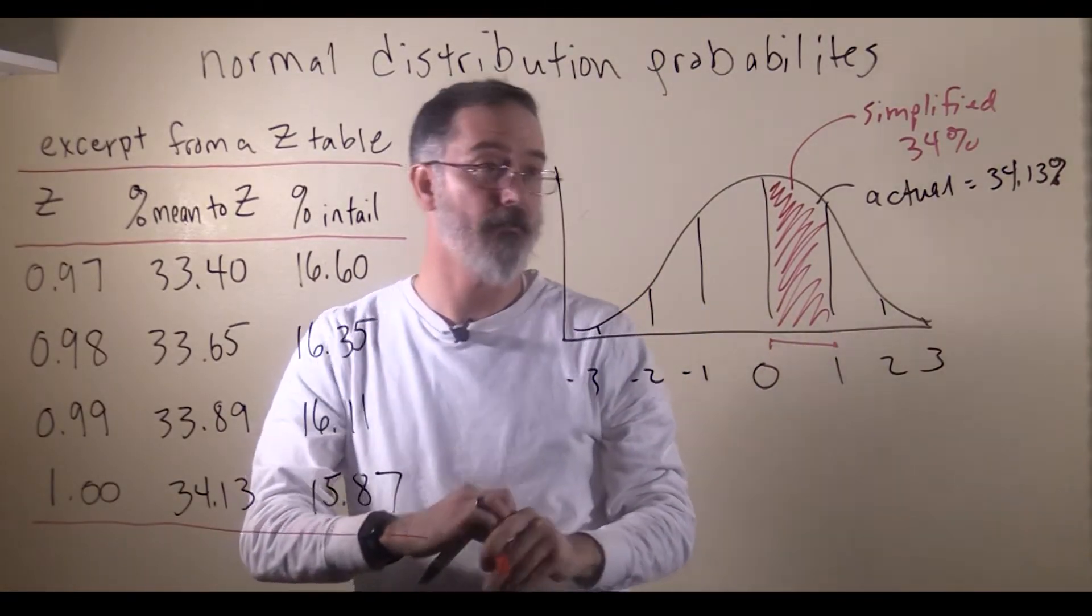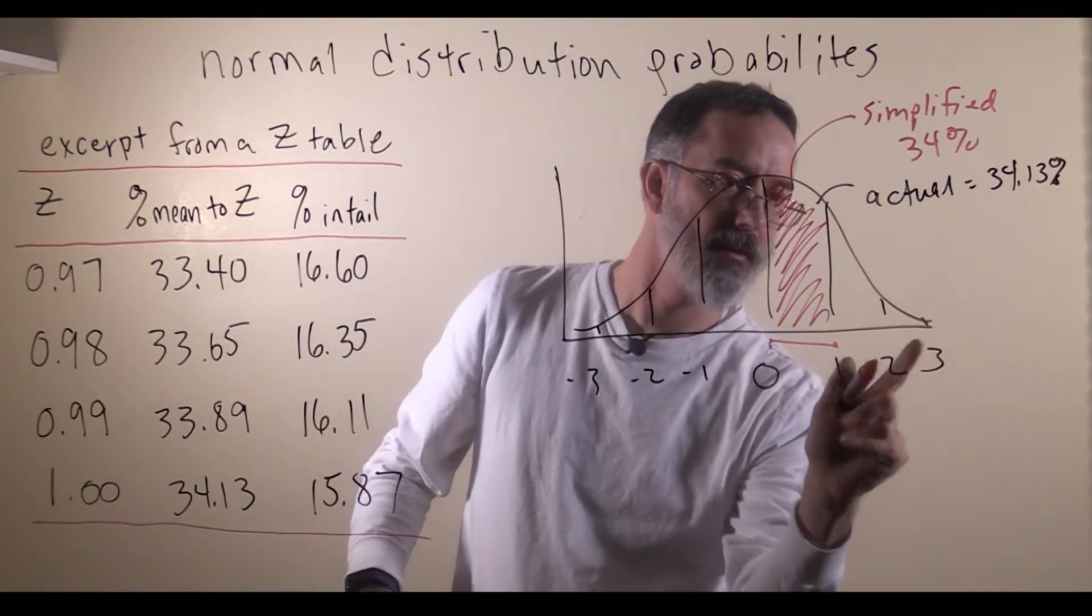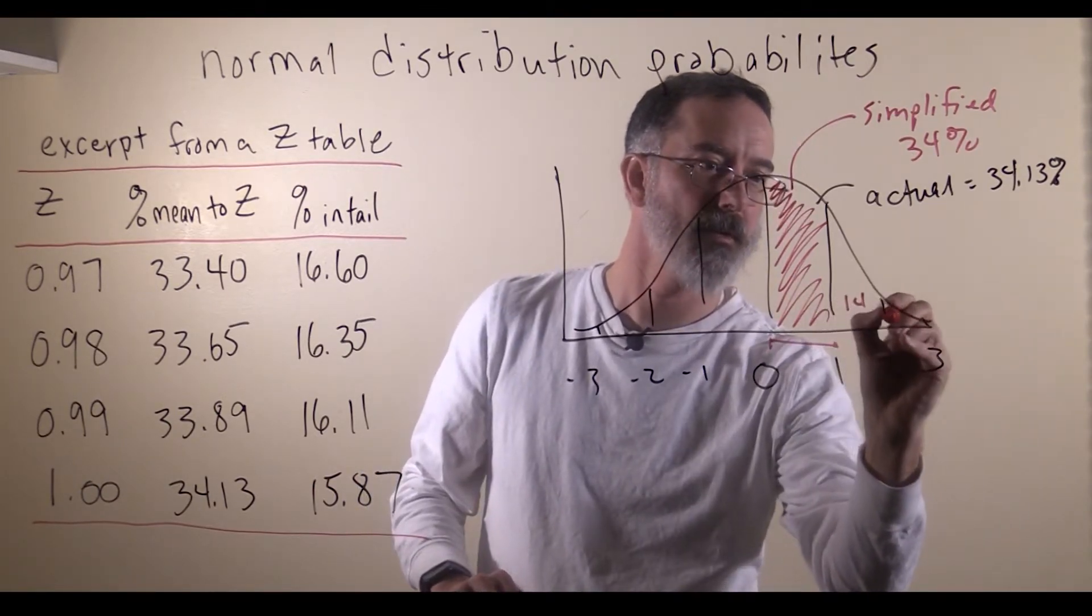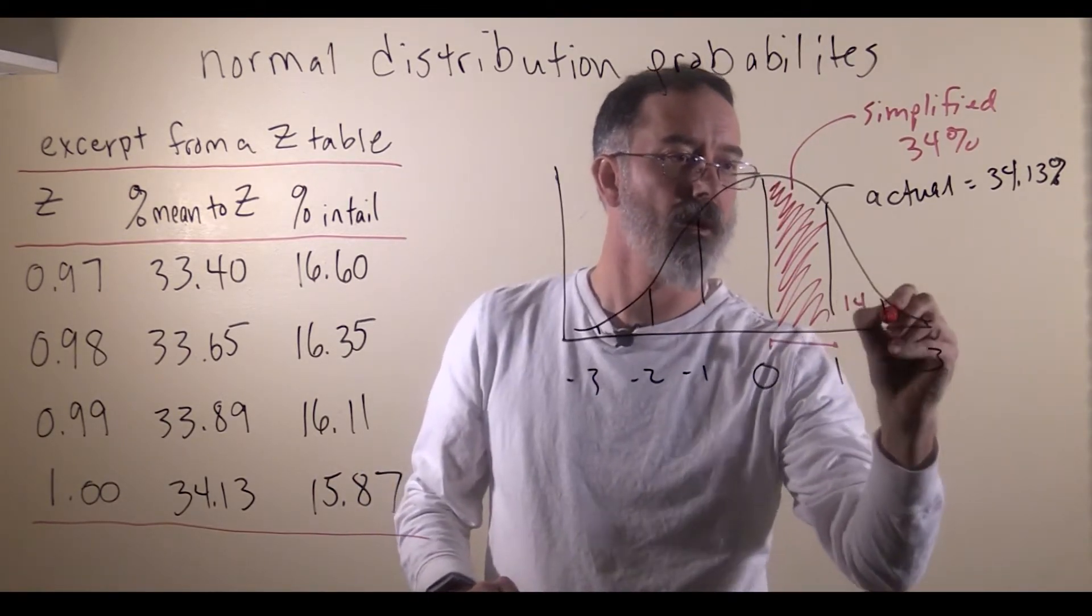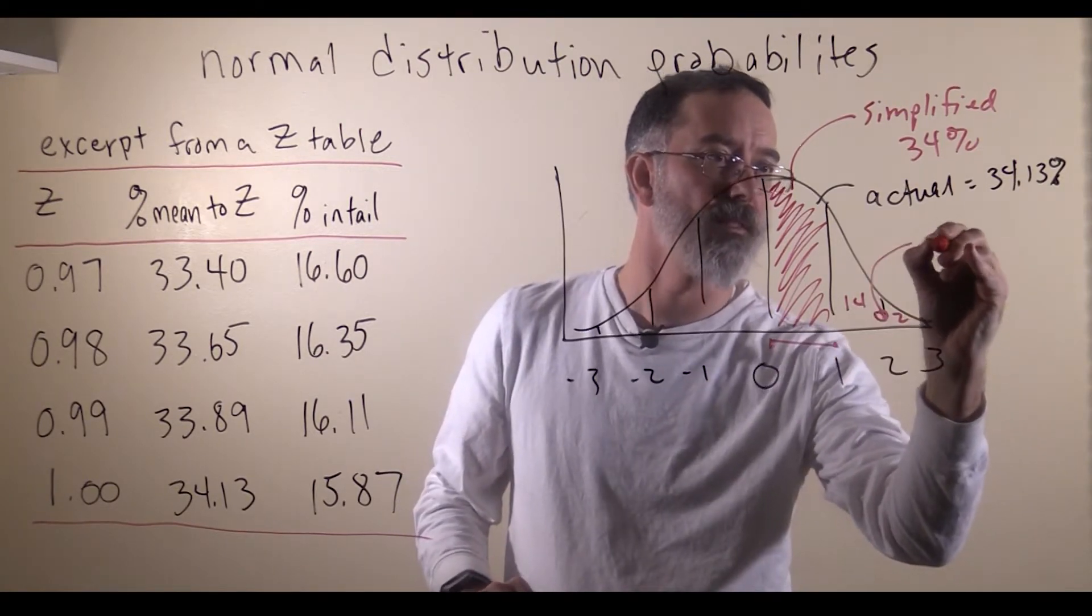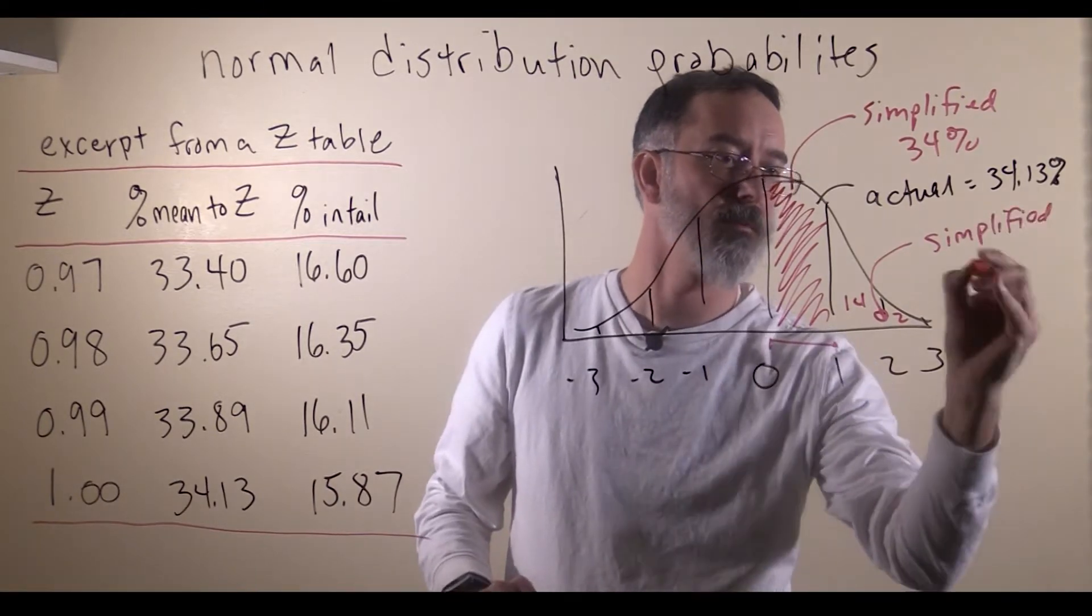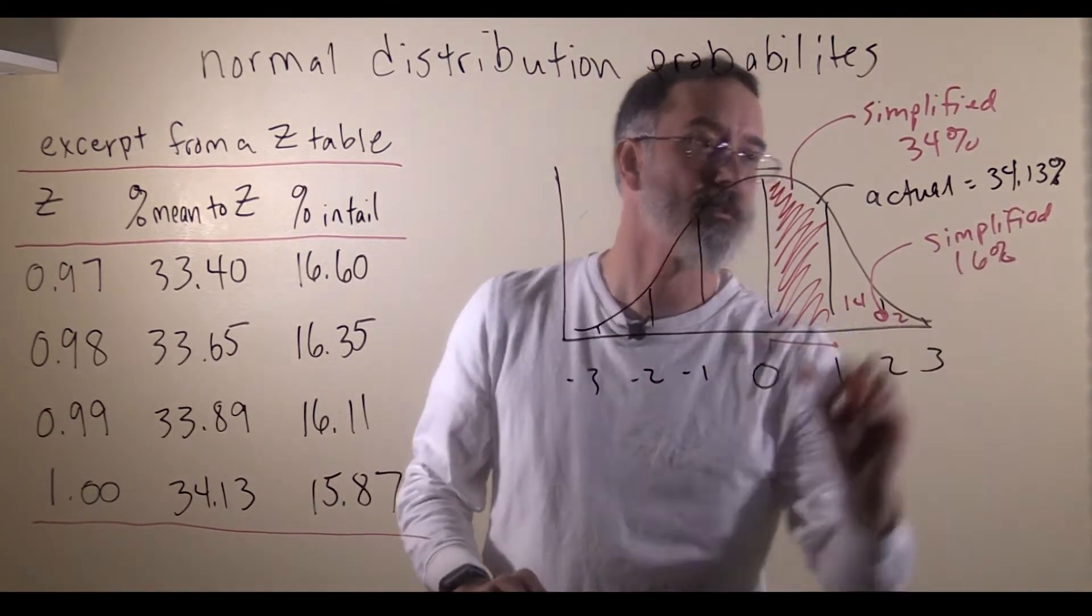When we did the simplified version, and we would have done beyond 1, we said that this was about 14, and this was about 2. So together, those in the simplified approach would have been 16%.